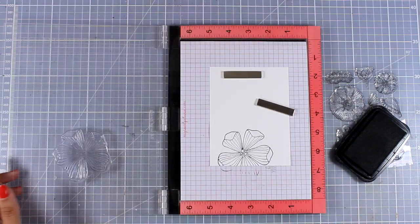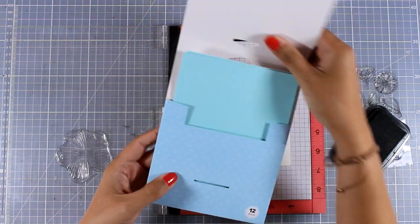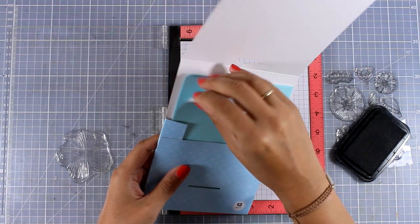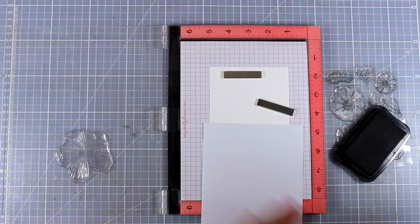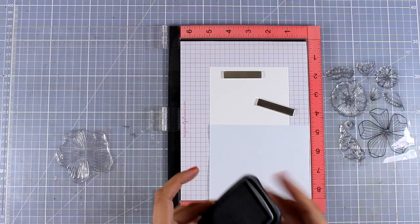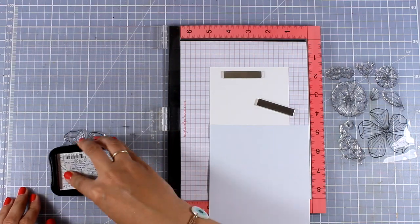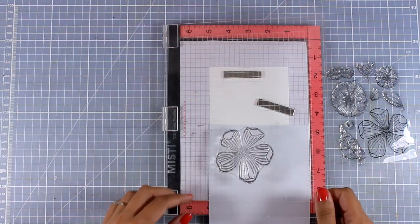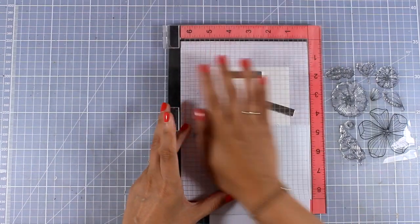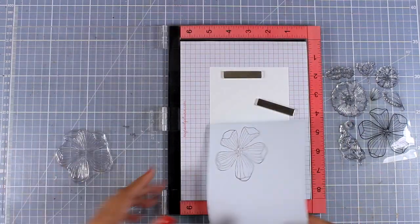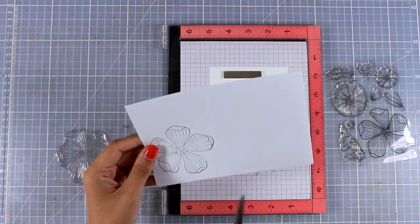And then, just because I want to create a flower composition, I'm going to go ahead and do some masking. So I'm going to use this masking paper and I'm going to stamp on top of that the flower again. Now I am going to use my scissors and cut the flower out so this way I will have a mask.